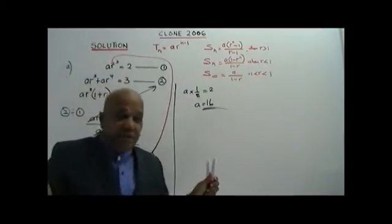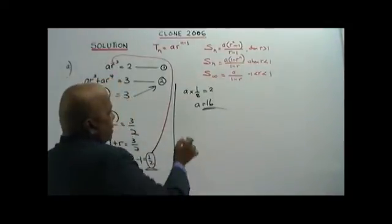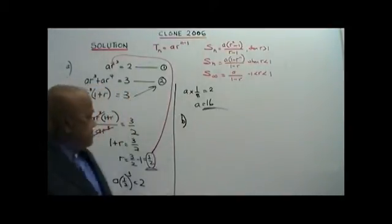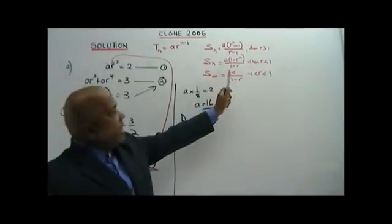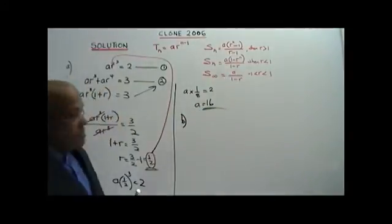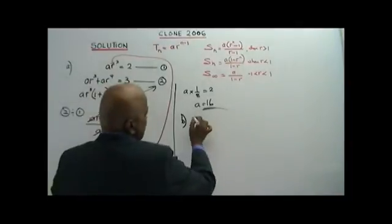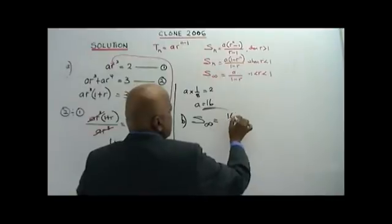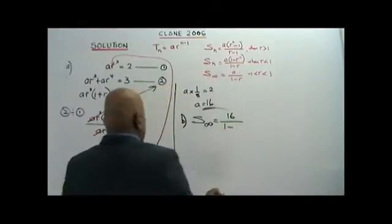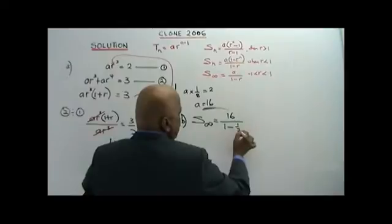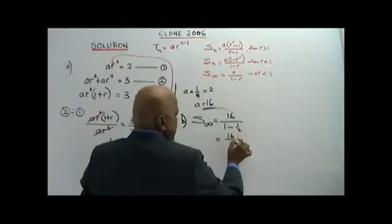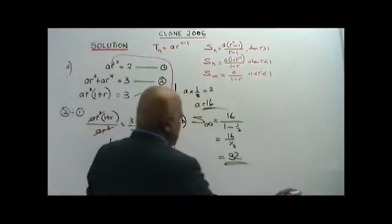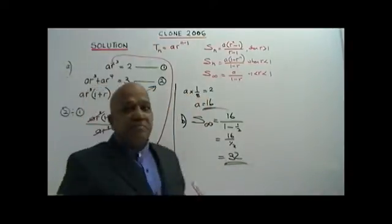Part B: you are asked to find the sum to infinity. You apply the sum to infinity rule. Sum to infinity equals A over 1 minus R, which is 16 over (1 minus 1/2), giving 16 over 1/2, which equals 32. That is your answer — sum to infinity is 32.